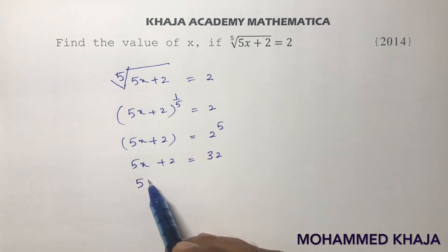Now, 5x equals 32 minus 2. 5x equals 30. So, x equals 30 by 5, which is nothing but 5 times 6. So, x equals 6.